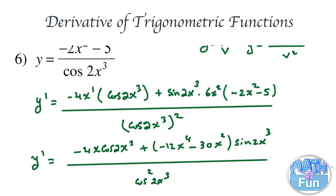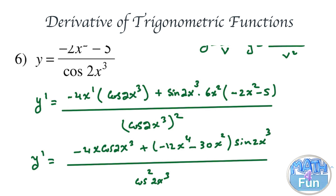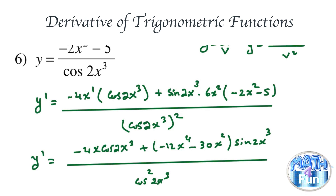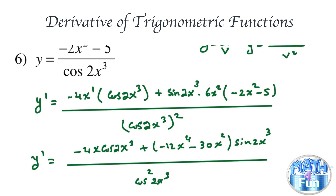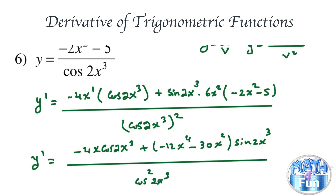Note that the square applies only to the cosine, because 2x cubed is the angle inside the cosine, so the expression is cosine squared of the angle. We can stop here.